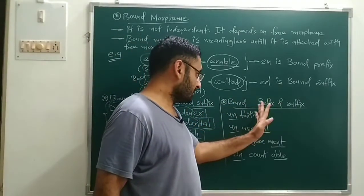For example, 'table' is a free morpheme because 'table' has its complete meaning. It does not require any other word to indicate its meaning. With the help of 'table' alone, you can understand its meaning — it does not require any other word.